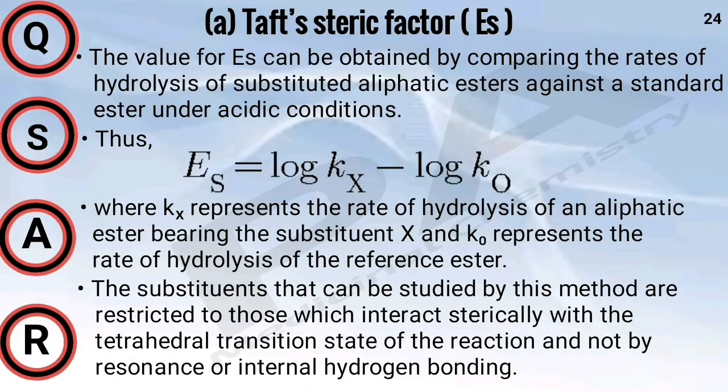Under steric properties, we are going to see the Taft steric factor, molar refractivity, and Verlu steric parameter. The Taft steric factor is indicated by the symbol Es. The value of Es can be obtained by comparing the rate of hydrolysis of a substituted aliphatic ester against a standard ester under acidic conditions. The formula is: Es = log(Kx) − log(K0).